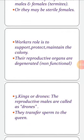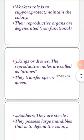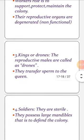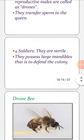Kings or drones: the reproductive males are called drones. Their role is to transfer sperm to the queen. Soldiers: these are sterile. They possess large mandible jaws, and thus they defend the colony.